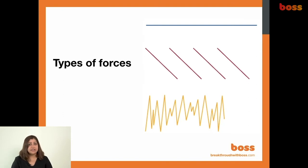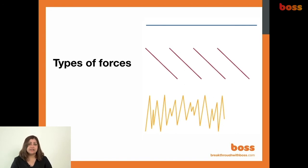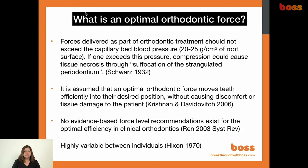Many types of forces exist: continuous, intermittent, and interrupted. A removable appliance often delivers interrupted forces because it is removed and put on. Intermittent forces include things like elastics. What is an optimal orthodontic force? Force should not exceed capillary blood pressure, which is about 20-25 grams per centimeter square of root surface. If force exceeds that, compression occurs and tissue necrosis in the PDL develops.